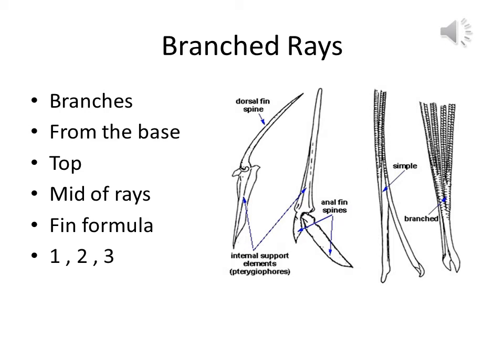The fifth type is branched rays. Branched rays, as the term indicates, have branches either from the base, middle, or tip of the rays. These are cited in the fin formula by Arabic numerals — 1, 2, 3, etc. In the picture you can see the spines of the dorsal fin, spines of the anal fin, simple spines, and branched spines — so it is easy to differentiate between them.